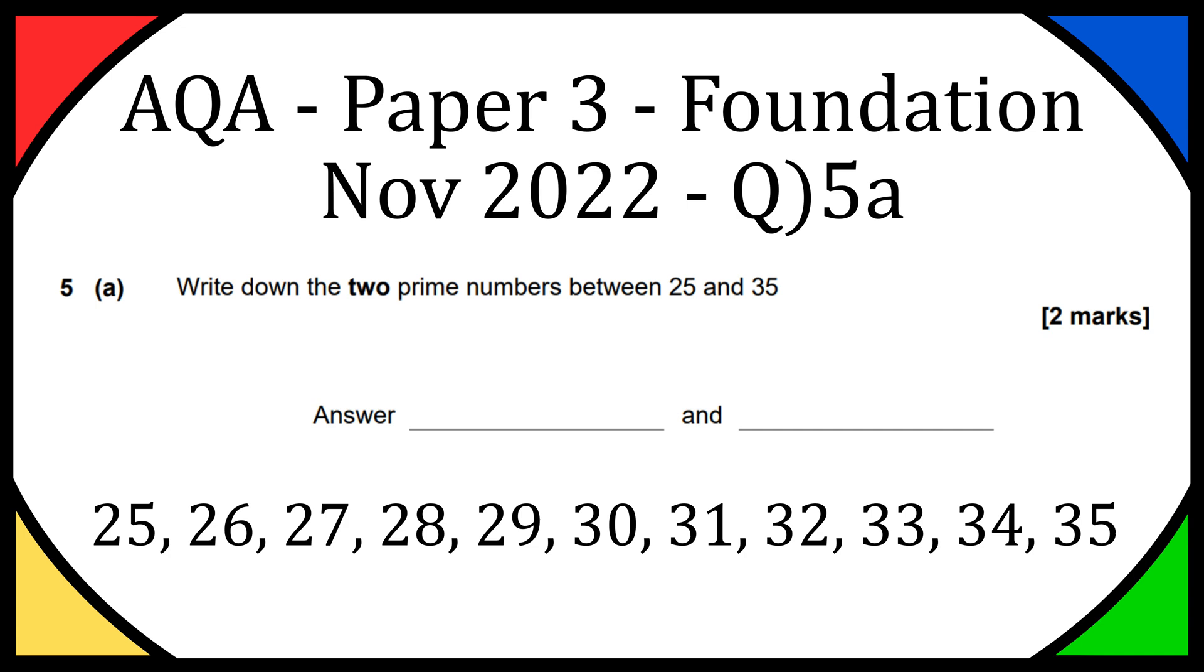So let's get rid of some straight off the bat and see which can be divided by five. That's going to be 25, 30 and 35 so we can get rid of them.